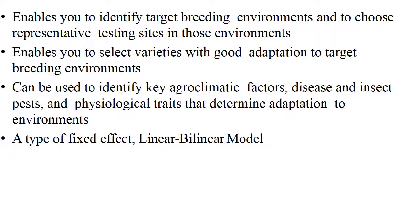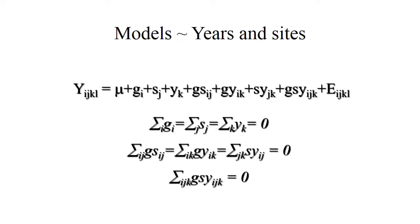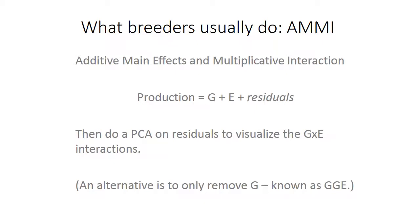The AMMI model enables selection of varieties with good adaptation to target breeding environments and can be used to identify key agronomic factors, disease, insect pests and physiological traits that determine adaptation to environments. It is a type of fixed-effect linear bilinear model. The formula for the AMMI model for years and sites is given here. Breeders calculate G+E and residual effects, then perform PCA on residues to visualize the G×E interaction. An alternative is to remove only G, known as GGE.